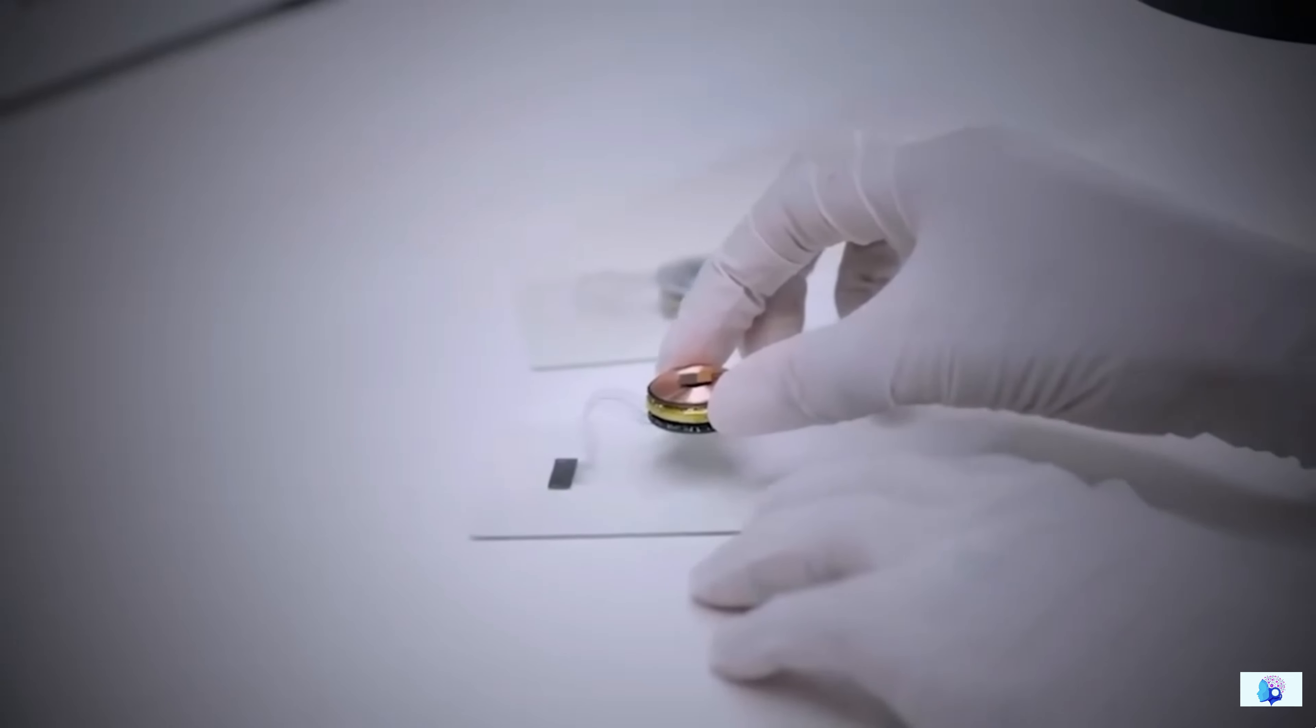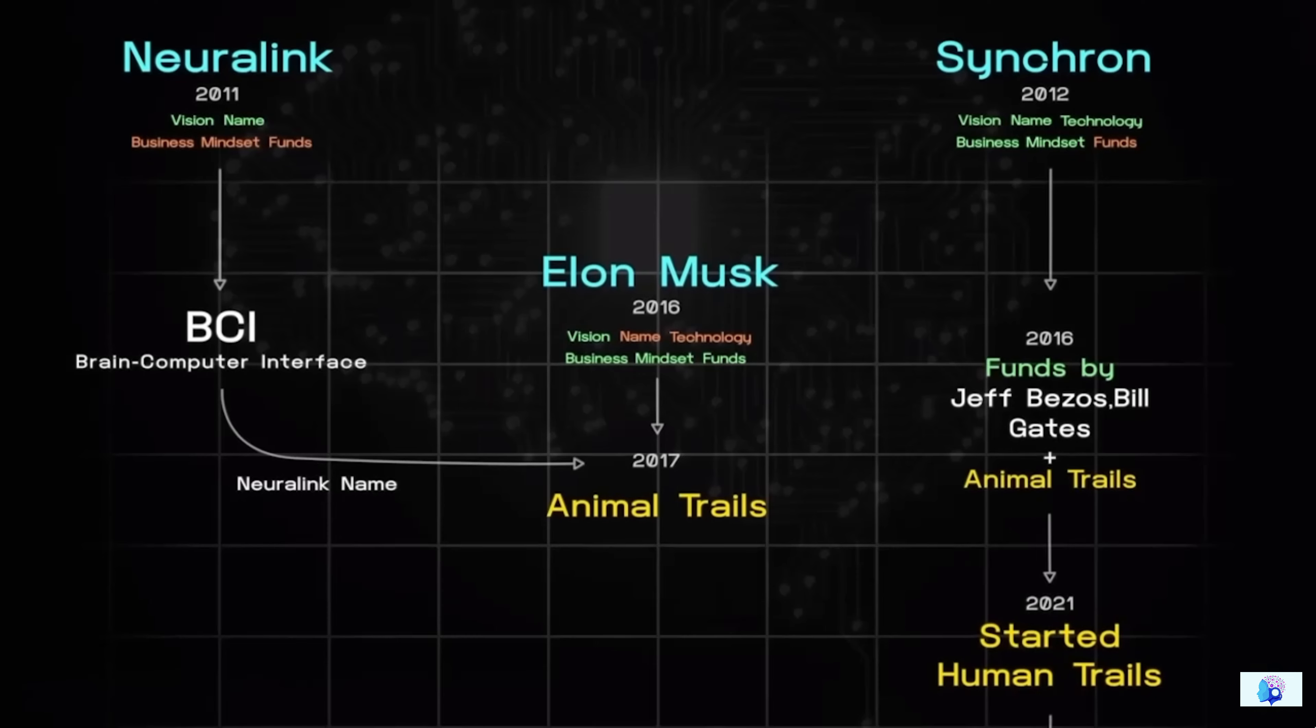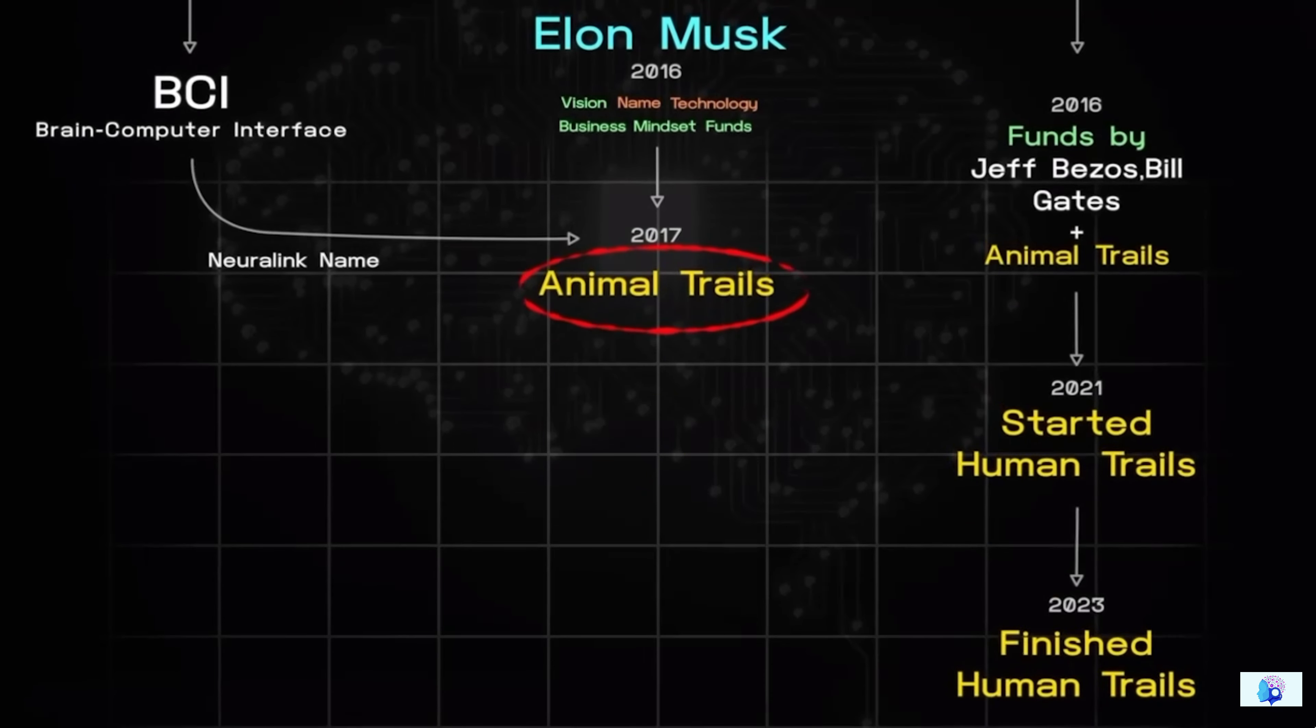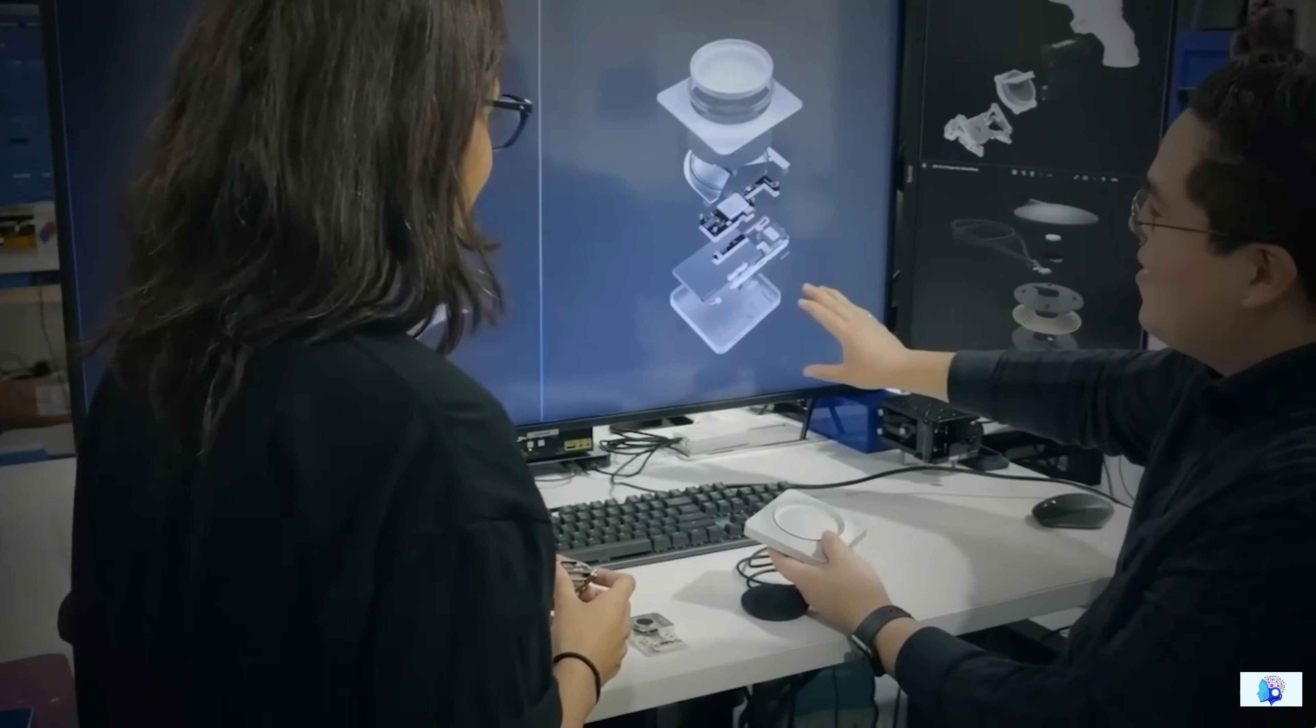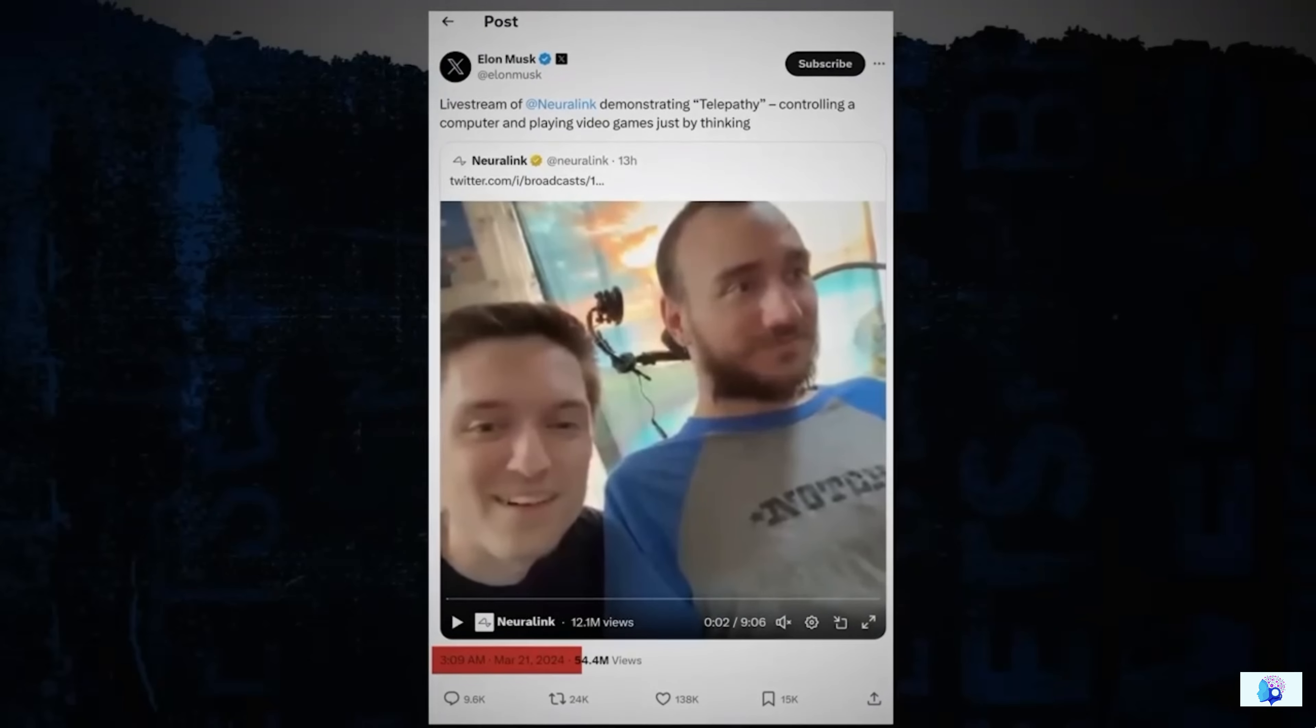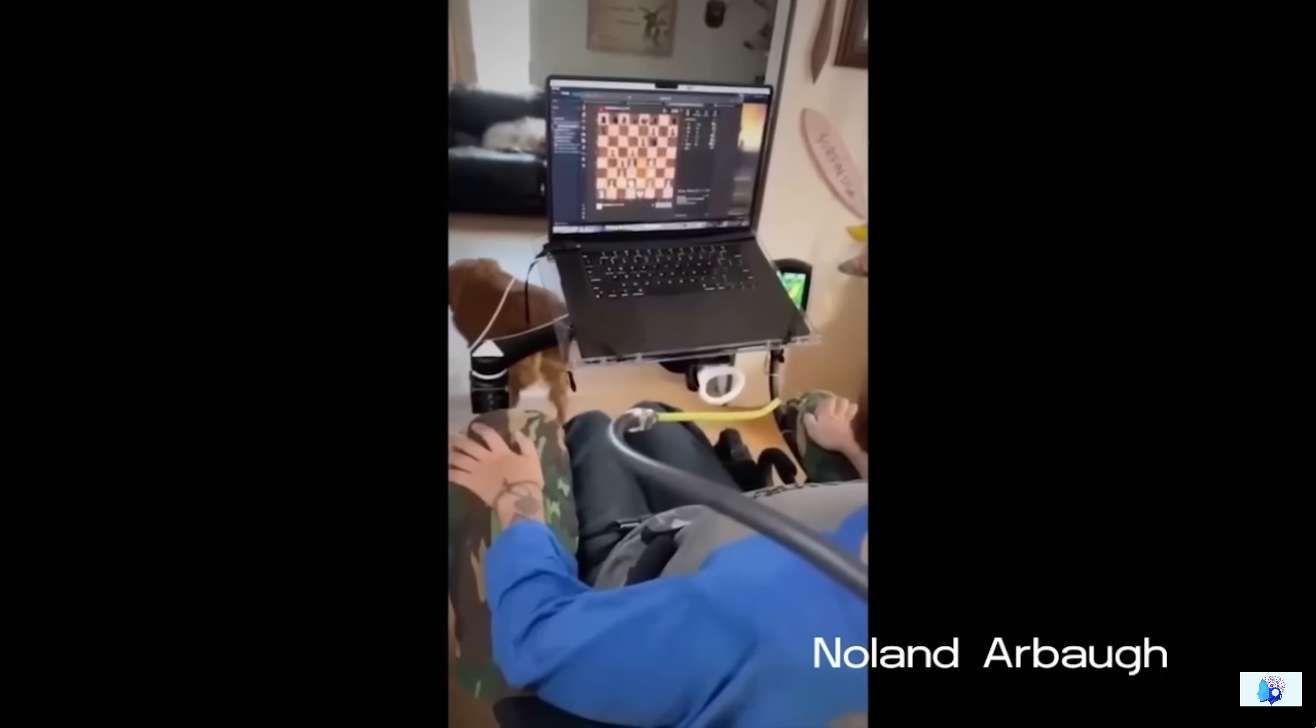Now, seeing this success of Neuralink, Synchron came into alert mode. And using all its resources, in 2023, he successfully completed human trials. Now, this was a higher level than the animal trials, which brought Elon Musk on its back foot. Now, everyone was thinking that Elon Musk's Neuralink company had finally lost the battle. But then all of a sudden today, on the 21st of March 2024, Elon Musk tweeted that Neuralink's human trials have been successful. In this trial, a paralyzed patient, Nolan Arbog, is now able to play online chess on his laptop with just his thoughts.